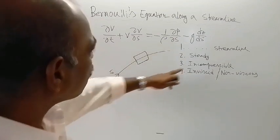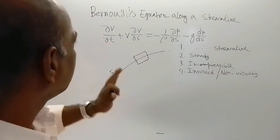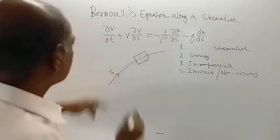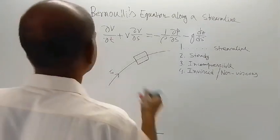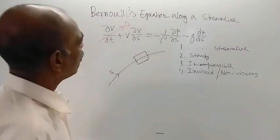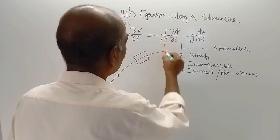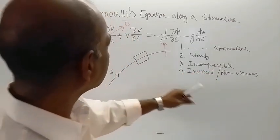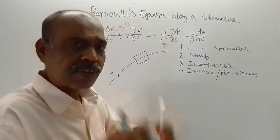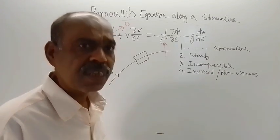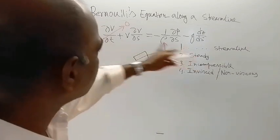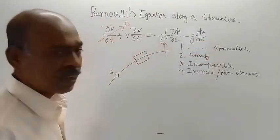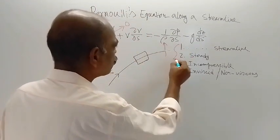Since the flow is steady, the time derivative of any flow variable must be zero — so this del V del T term is zero. Since the flow is incompressible, rho, the density of the fluid, is a constant quantity. Since the flow is inviscid, there is no effect of viscosity, and you can see there is no viscosity term in Euler's equation of motion — it is already absent.